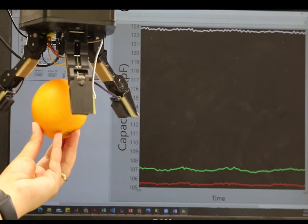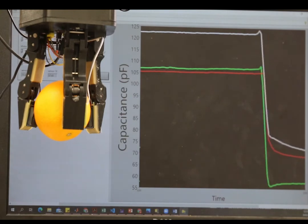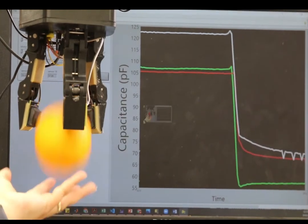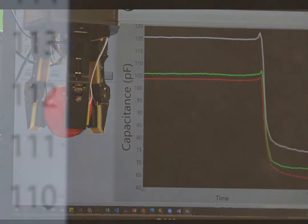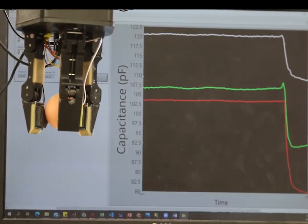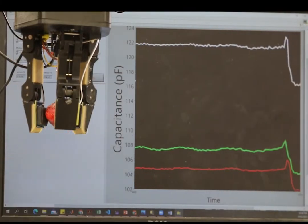We mounted the sensor on a robotic gripper to show how it can sense different objects with different stiffness, from a hard fruit like orange or apple to a delicate object like an egg. It can even grab a fragile strawberry without squeezing it.